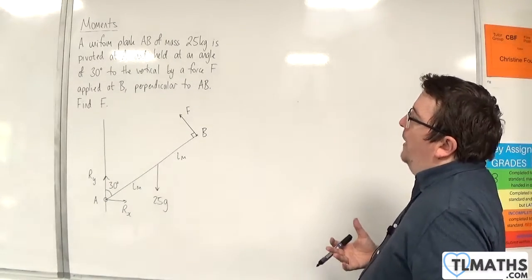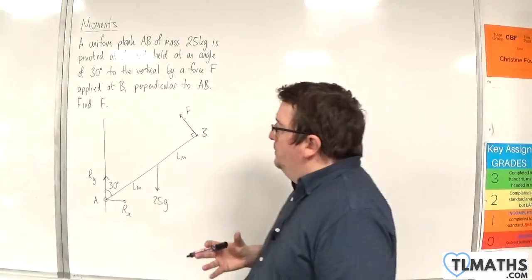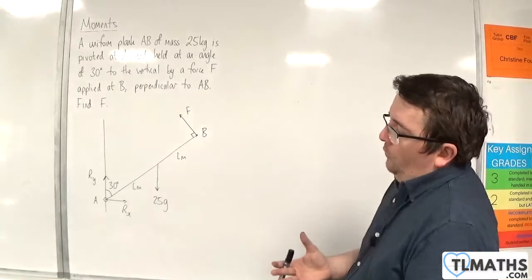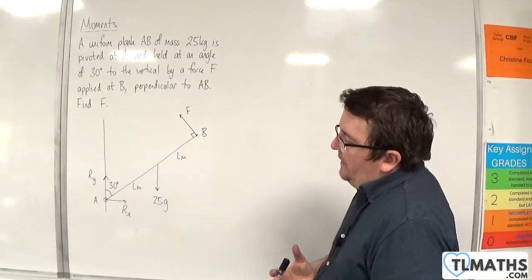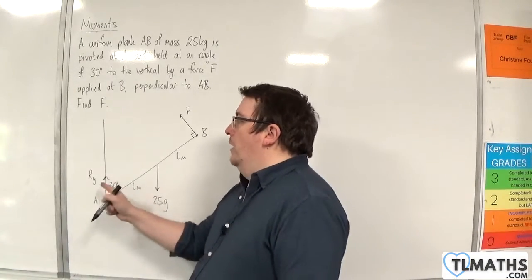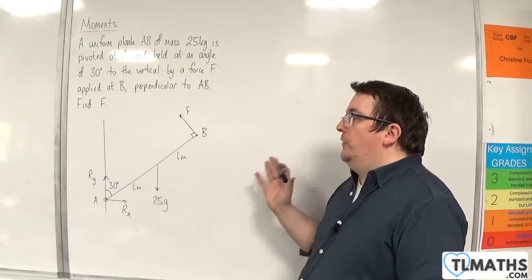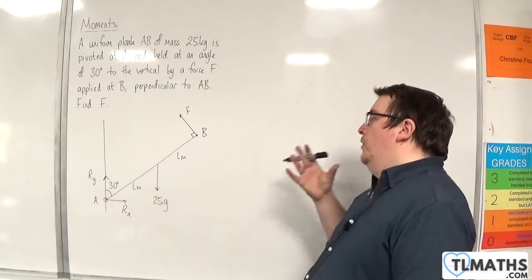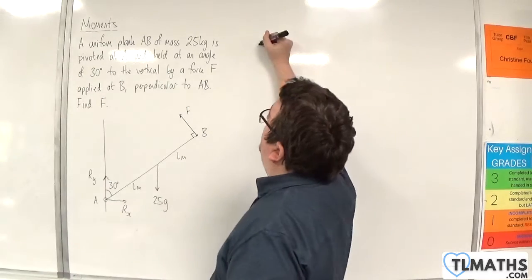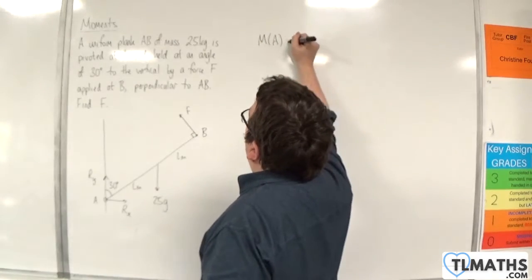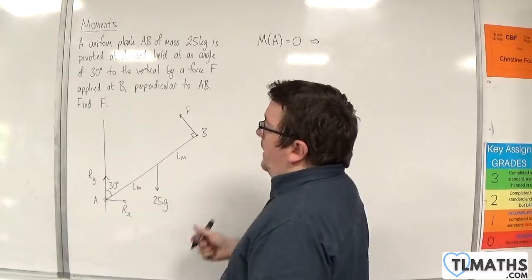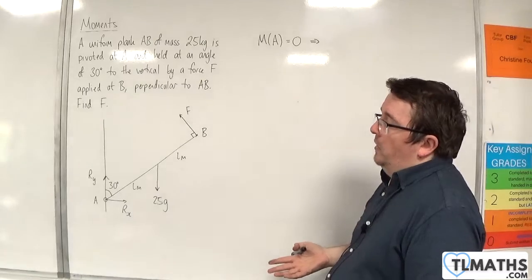So next up, let's think about what we can do. Now, resolving forces here isn't really going to work for me because I don't know RY and I don't know RX. So I've got two unknowns in either direction. So it probably makes sense to take moments about point A because then I don't need to work with RX and RY.